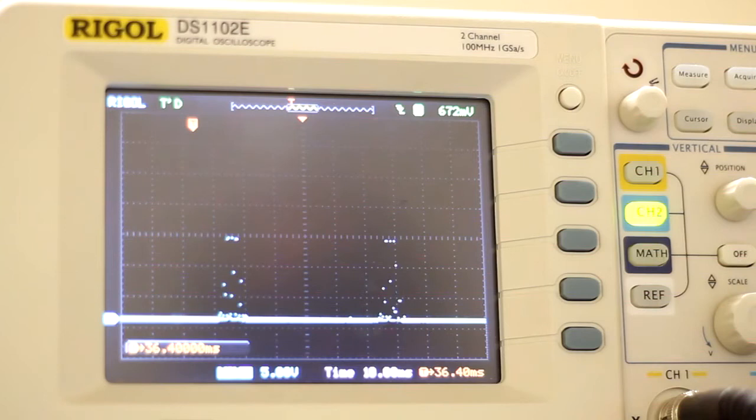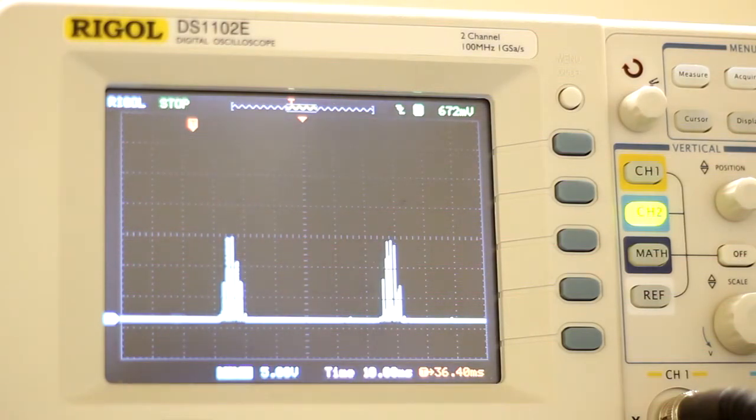As we zoom out on the time axis, we can see that there are multiple copies of the peaks, separated by a time that corresponds to the free spectral range, or FSR, of the spectrometer, in this case 10 gigahertz.